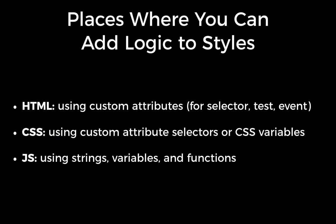In CSS, you're able to use custom attribute selectors, which can be used to pass information to JavaScript. And you can also make use of CSS variables inside CSS that can be updated dynamically outside of CSS. In JavaScript, you're able to use strings, variables, and functions to supply or deal with the logic related to styling.